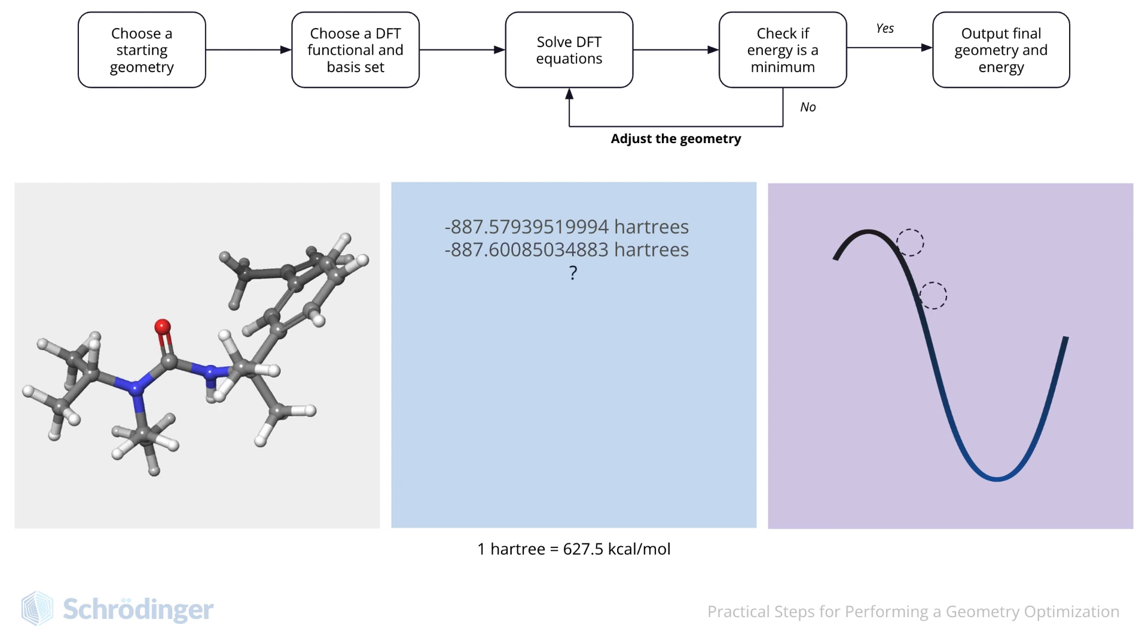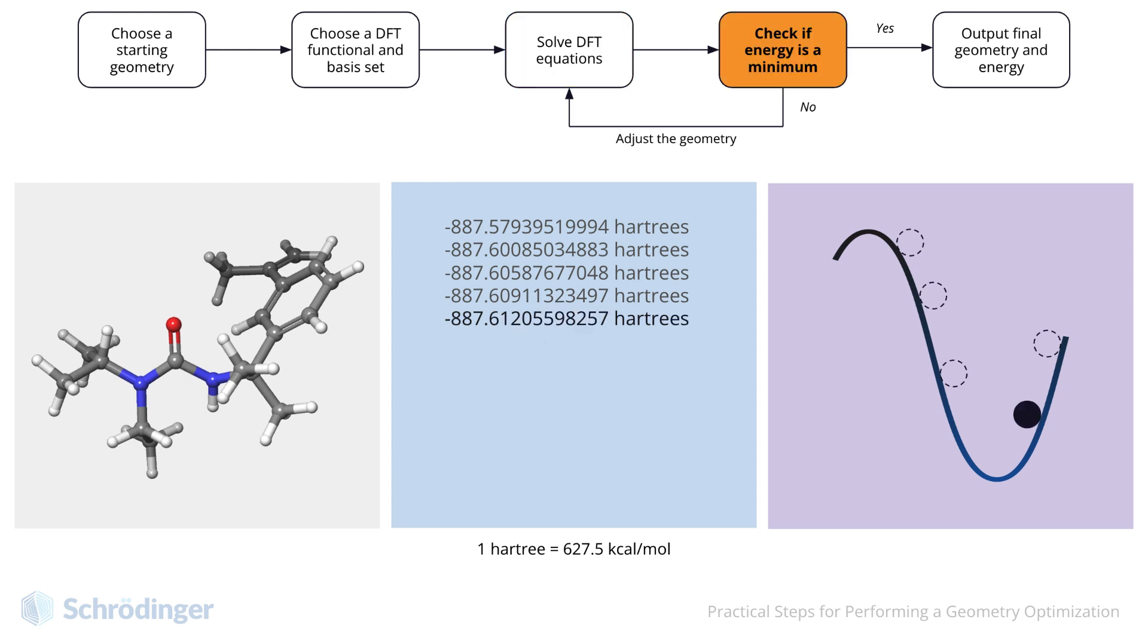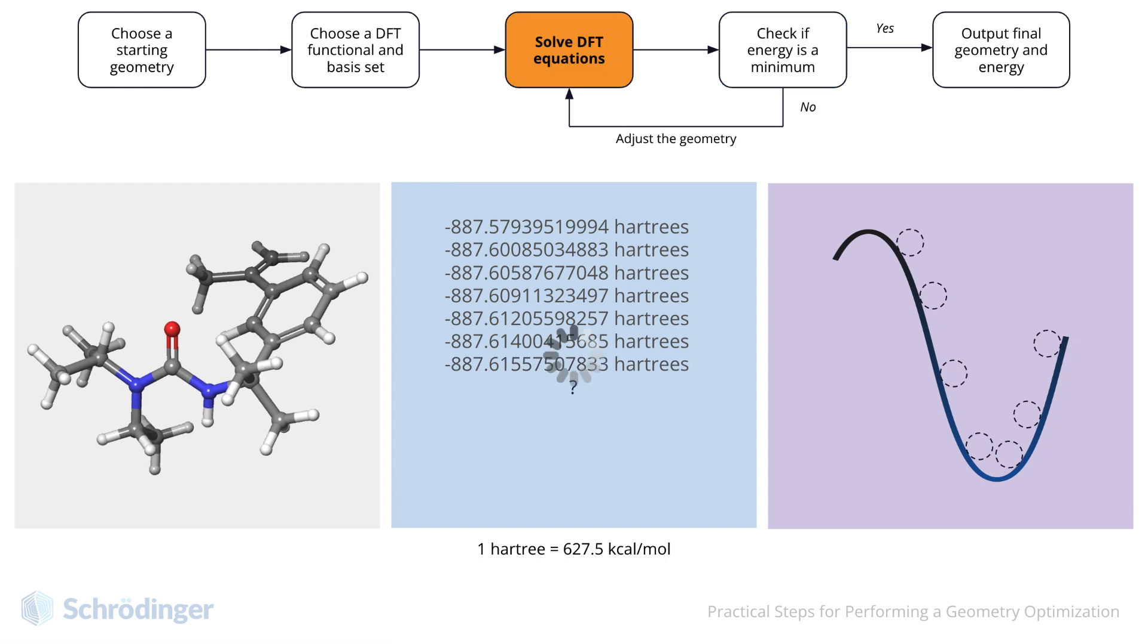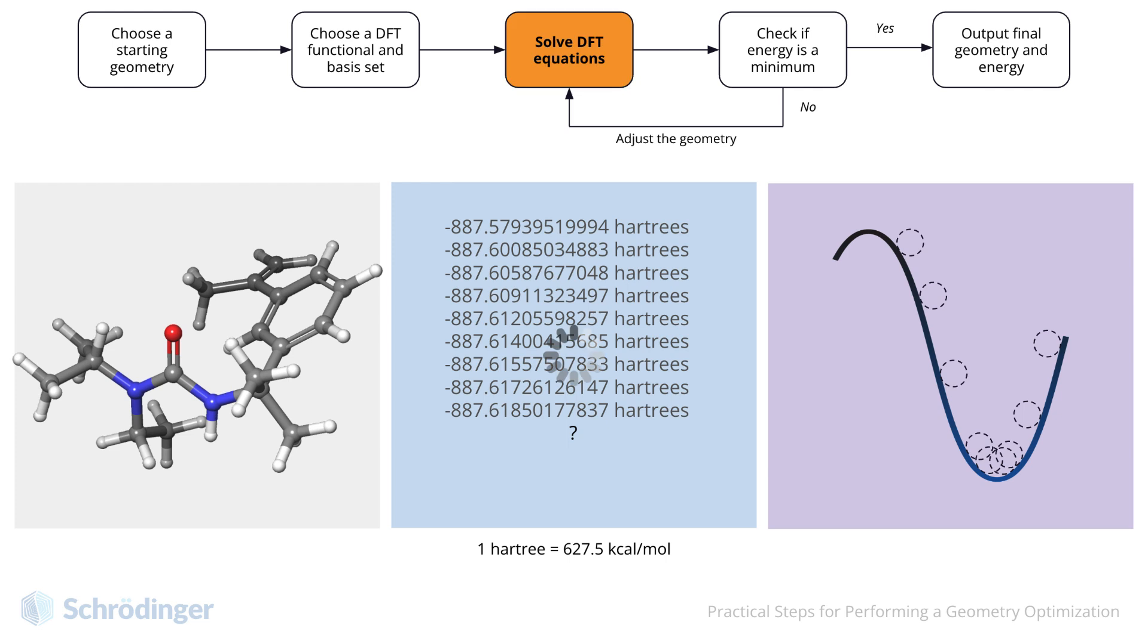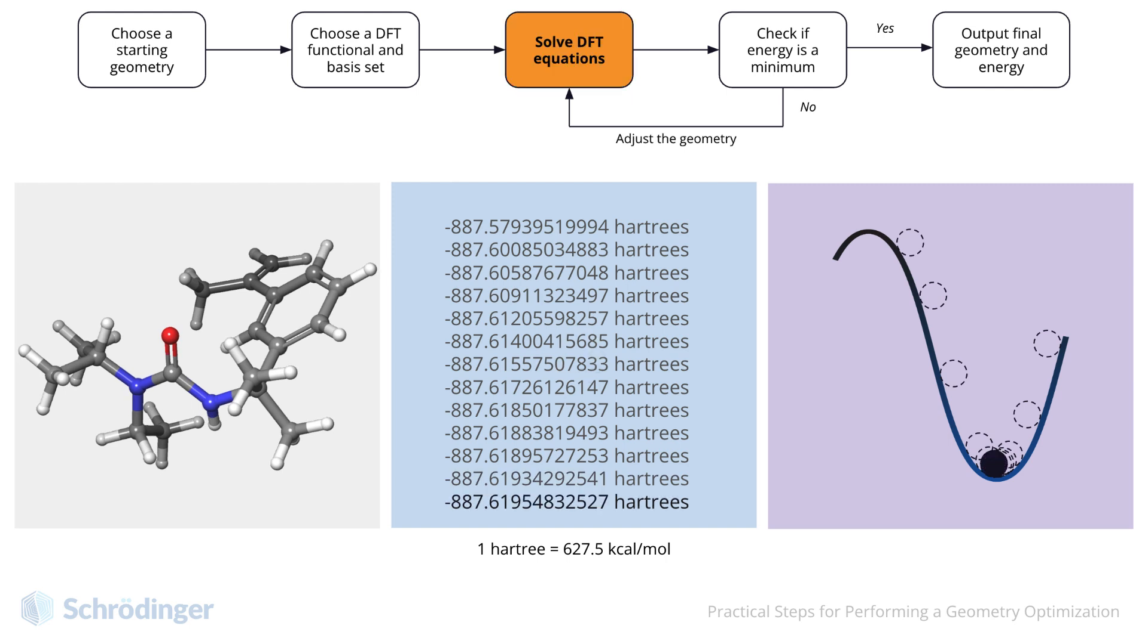This loop proceeds for as many steps as needed. Let's watch it a little faster. Notice that the energy is dropping each step, and the ball is approaching the bottom of the well. Some of the earlier jumps in energy were quite large, several kilocal, but as we get closer to the end, the jumps are much smaller. This is a good sign that we are approaching convergence.